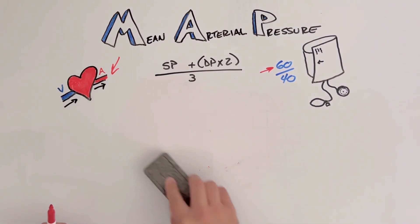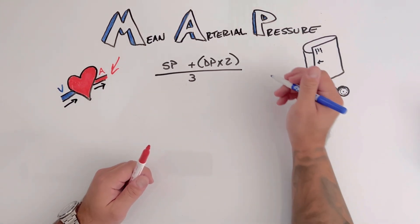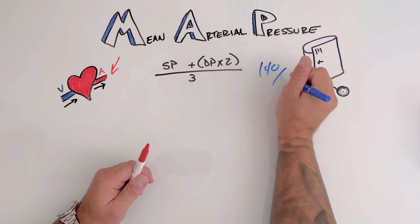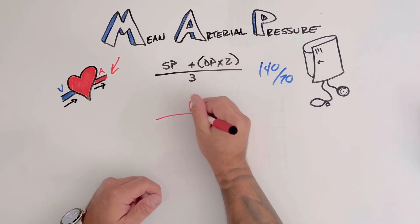Let's do one more. So that was an obviously low blood pressure. Let's say we have a patient with 140 over 70 blood pressure. Let's plug it in and see what our MAP is.